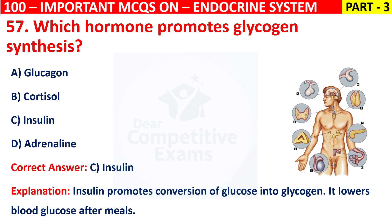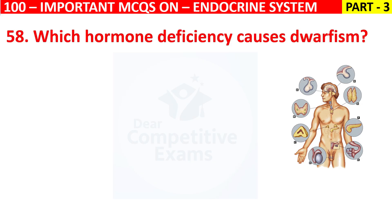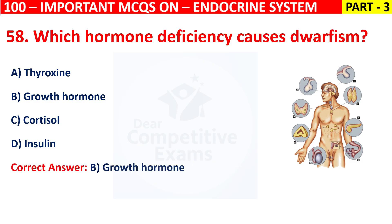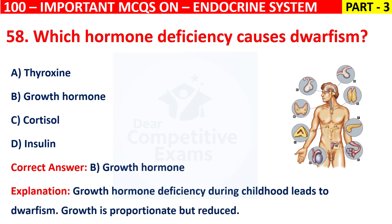Question 58: Which hormone deficiency causes dwarfism? Your options are Thyroxine, Growth hormone, Cortisol, or Insulin. The correct answer is B, that is Growth hormone. Growth hormone deficiency during childhood leads to dwarfism. Growth is proportionate but reduced.